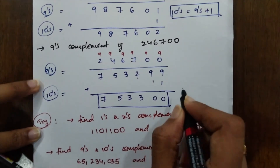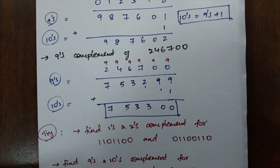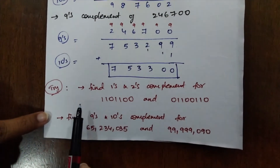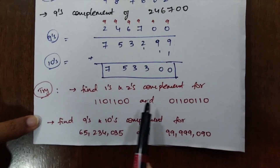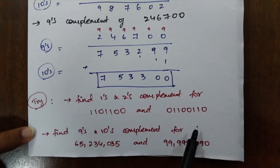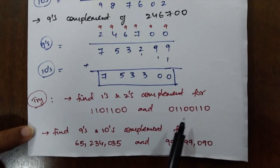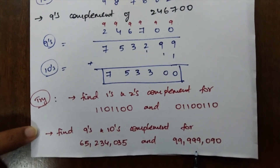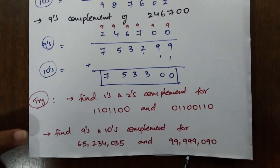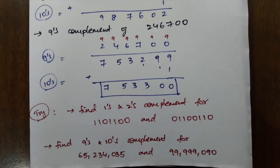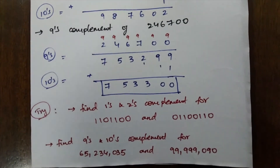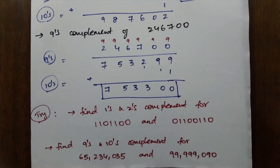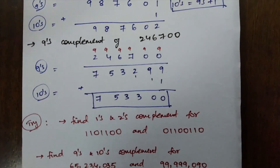Now I want you to try finding the 1's and 2's complement for two binary strings, and the 9's and 10's complement for some decimal digits. Pause the video and try it — it will be really helpful for the next video. I hope you enjoyed this one. Stay tuned to Edu Moon for more videos. Thank you.